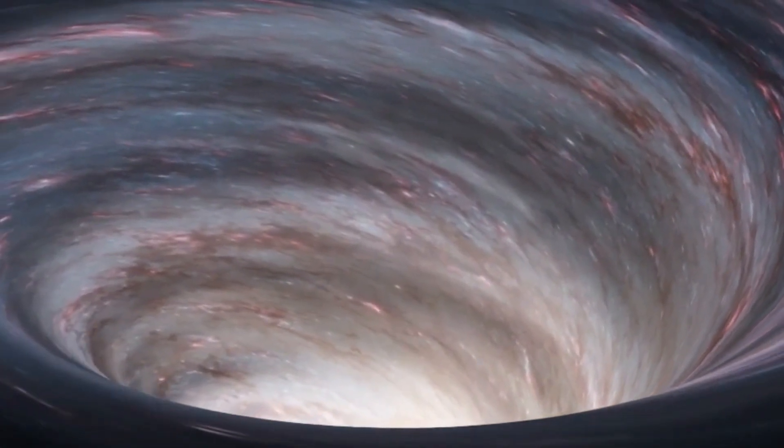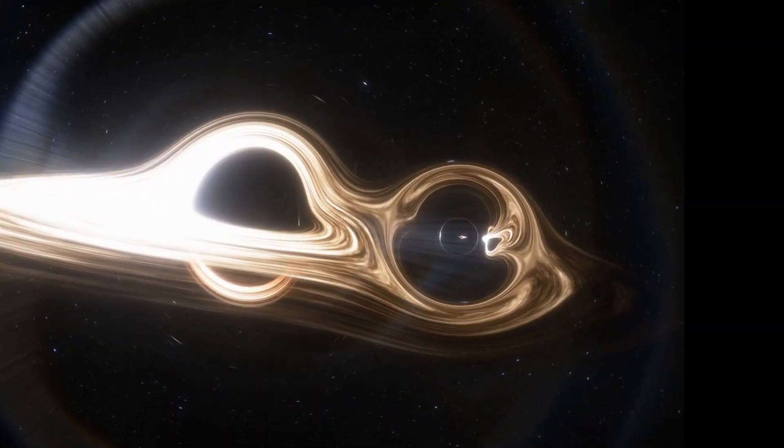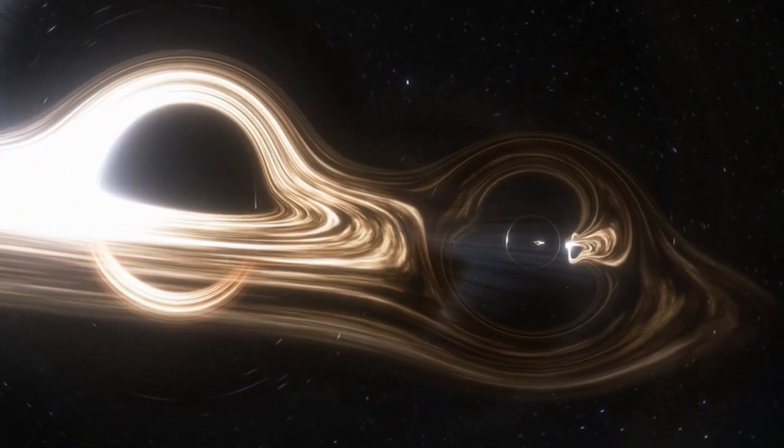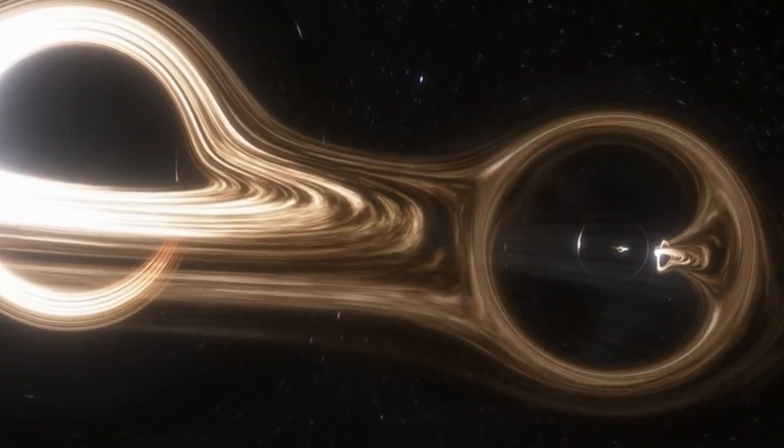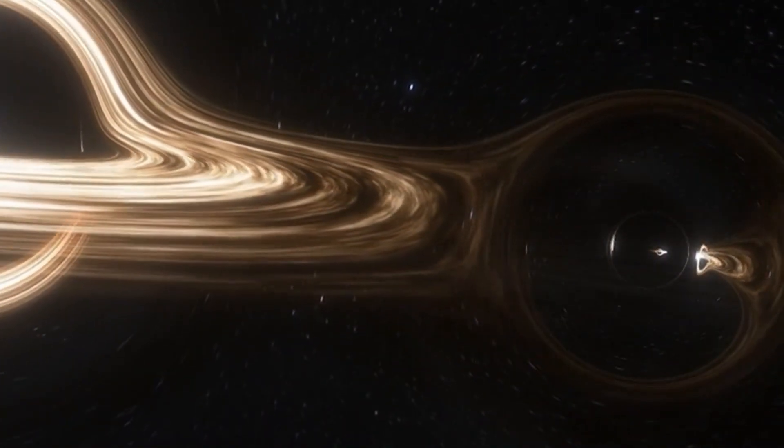Black holes come in different sizes. They can be as small as an atom or as big as a billion suns. The size of a black hole is determined by its mass.